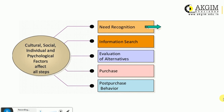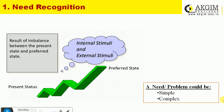The first stage is need recognition — perceiving a need, a felt deprivation, or a deficiency. A need can be triggered by an internal stimulus or an external stimulus. For example, if a person is hungry or thirsty, that is an internal stimulus. On the other hand, when a consumer sees a hoarding advertisement showing a chilled Coca-Cola or a burger advertisement, the need is stimulated by an external stimulus.